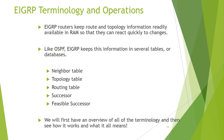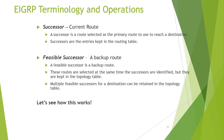EIGRP keeps route and topology information so that routers can quickly adapt to changes. This information is kept in several tables and databases: the neighbor table and topology table. In the topology table, multiple feasible successors for a destination can be retained. We will first have an overview of all the technology and then see how it works and what it all means.